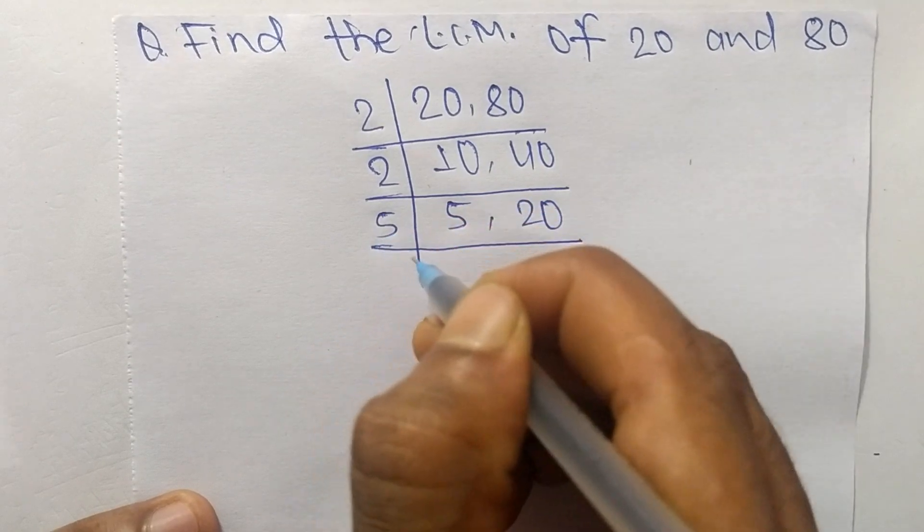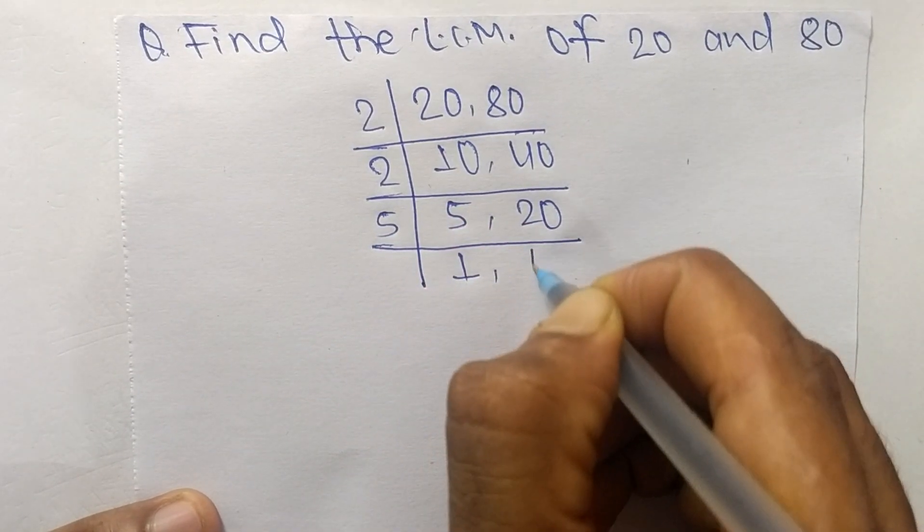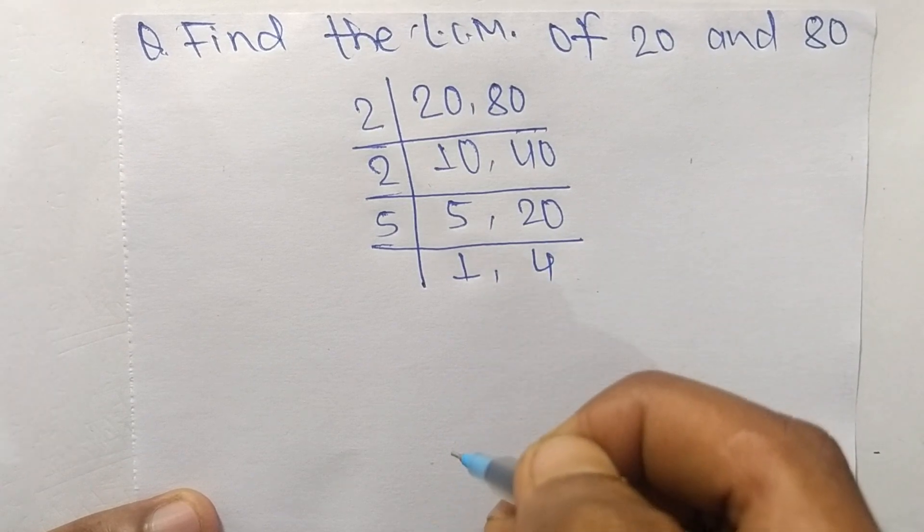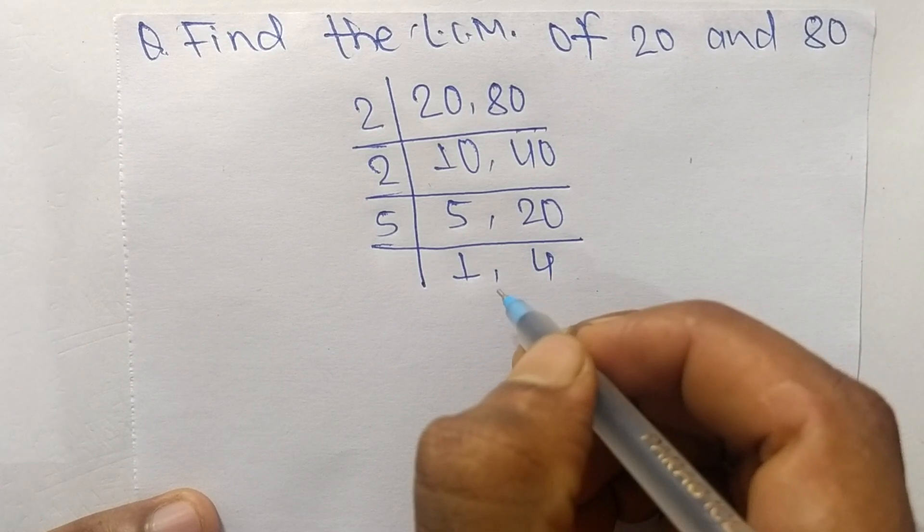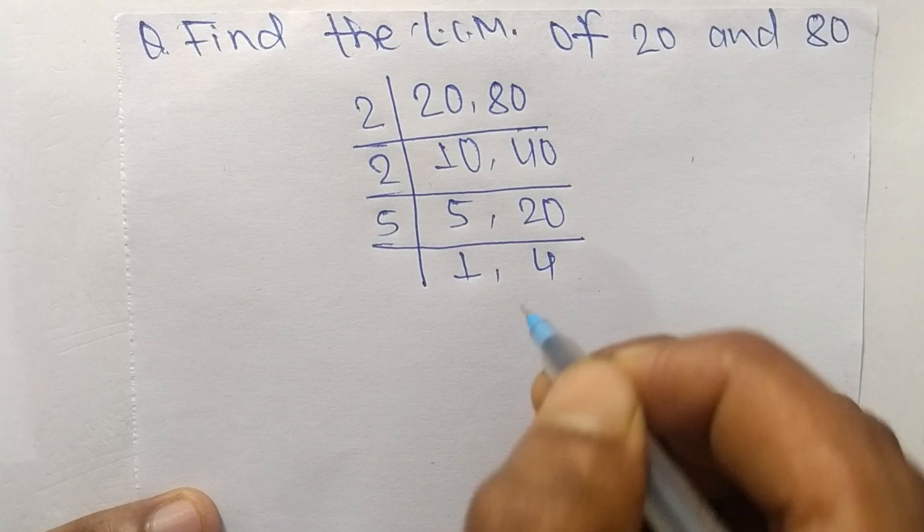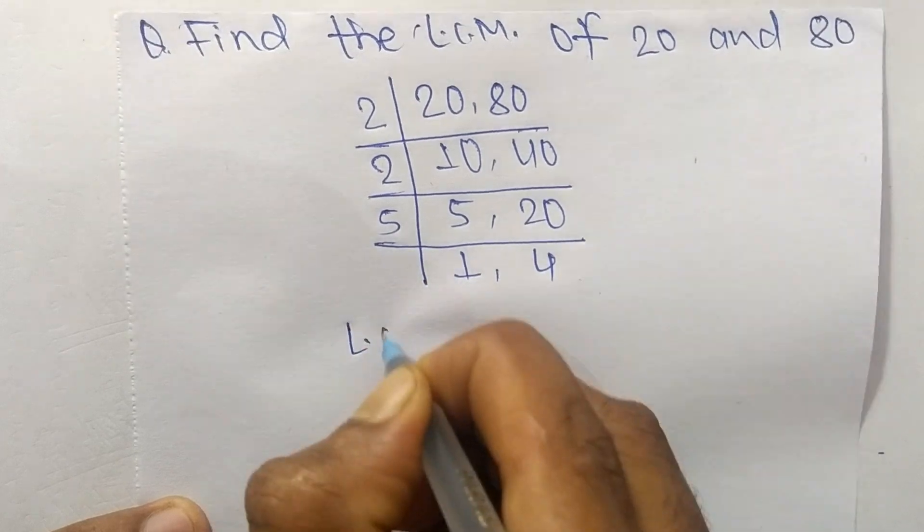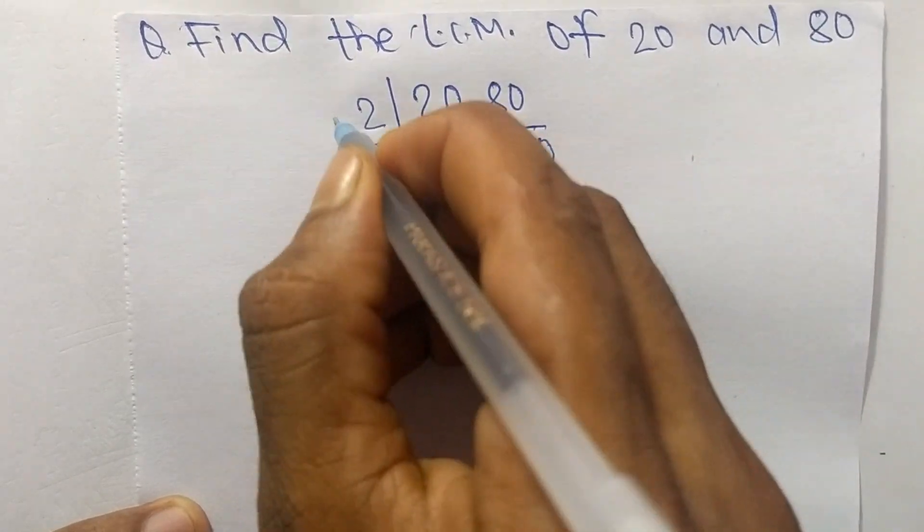5 times 1 equals 5 and 5 times 4 equals 20. At last we have 1 and 4, which are not exactly divisible by the same number. So the LCM is equal to, from this part, 2 times 2 times 5, and from this part 1 times 4.